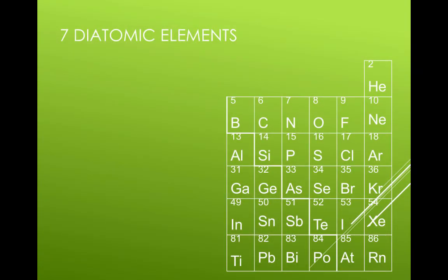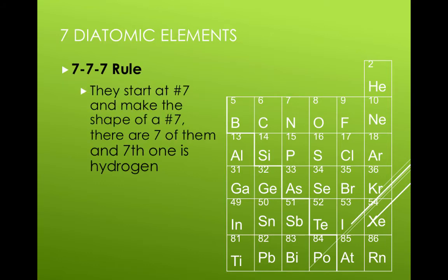There are seven elements that form diatomic molecules when in pure elemental form. I remember these using the 7-7-7 rule. This memory rule states that the sevens start at element number seven, it makes the shape of a seven, and the seventh one is hydrogen.